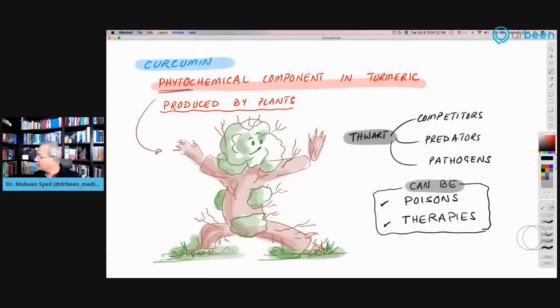So curcumin is a phytochemical. Plant chemical, phyto means a plant. Here for your reading and viewing pleasure, I have made a plant, a tree, which is playing Kung Fu. What it is doing is it uses curcumin like substances or phytochemicals for the plants to thwart their competitors, their predators, and their pathogens. The phytochemicals can be poisonous to us or can be therapeutic to us. For example, poison ivy and other poisonous substances from plants can kill us. But at the same time, there are therapeutic agents as well.